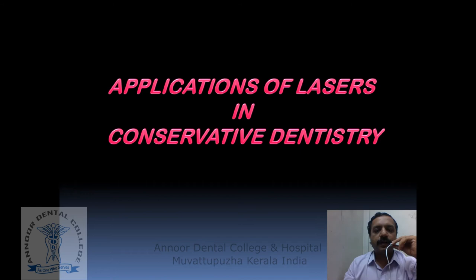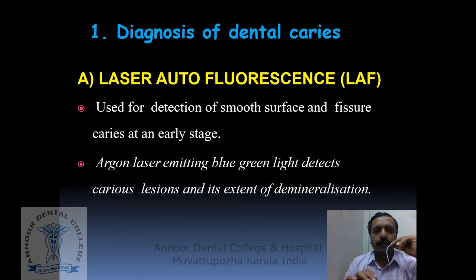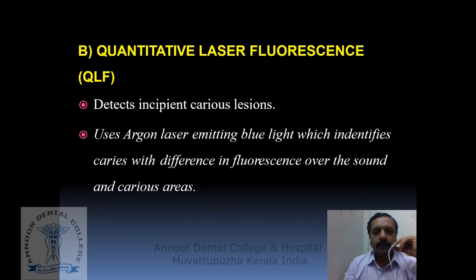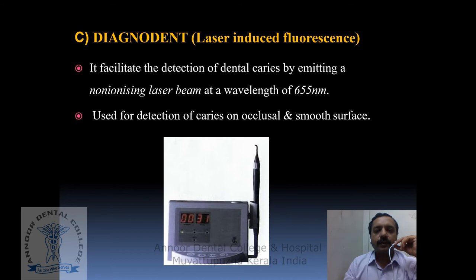Next we will be discussing the applications of lasers in conservative dentistry. The first application is diagnosis of dental caries. First is laser autofluorescence, used for detection of smooth surface and fissure caries at an early stage; argon laser emitting blue-green light detects caries lesions and their extent of demineralization. Second is quantitative laser fluorescence for detecting incipient caries lesions, using argon laser emitting blue light which identifies caries by difference in fluorescence between sound and carious areas. Next is DIAGNOdent, a recently designed instrument for detection of dental caries by emitting a non-ionizing laser beam at 655 nm, used for detection of caries on occlusal surfaces as well as smooth surfaces, where a diode laser identifies caries with increased fluorescence over the sound tooth.